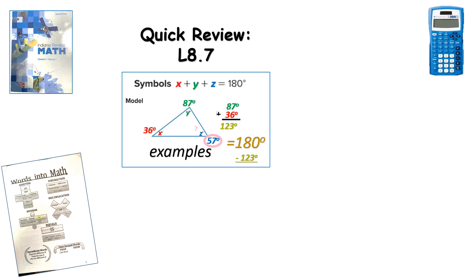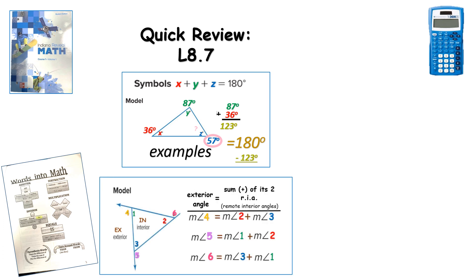The second half of lesson 8.7 was the idea of an exterior angle. Exterior meaning on the outside, interior meaning on the inside. Any exterior angle can be found by adding its two RIAs, or remote interior angles.